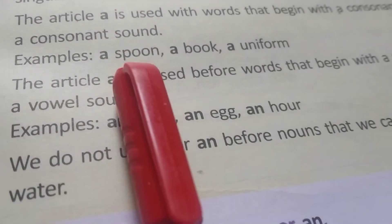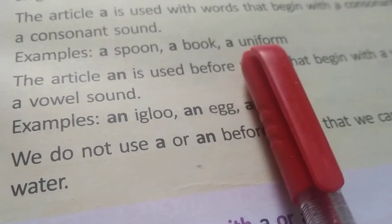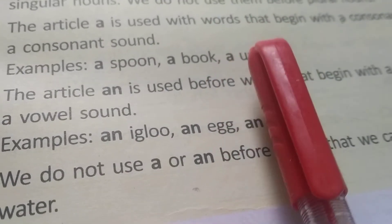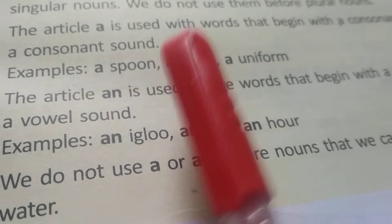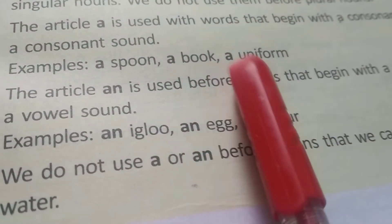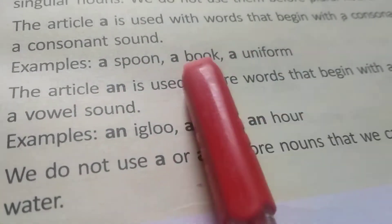Examples: a spoon, a book, a uniform. Uniform. If you have the word here, this is the word. But if we have the pronunciation, what is the pronunciation? It is the pronunciation. So we are not using an.